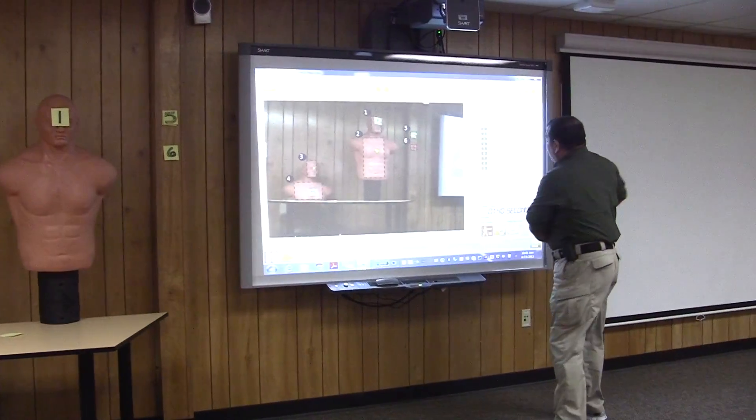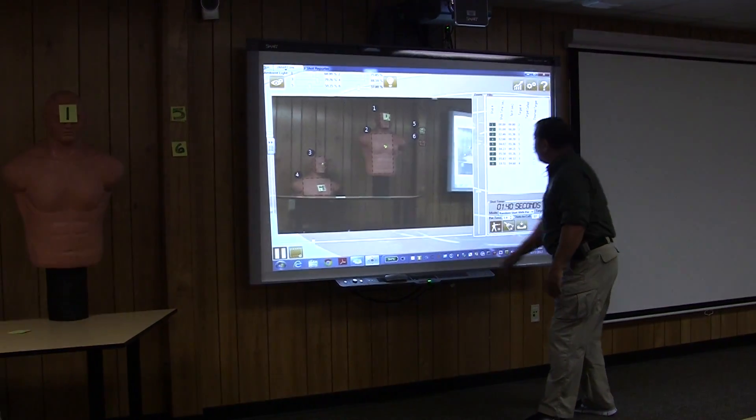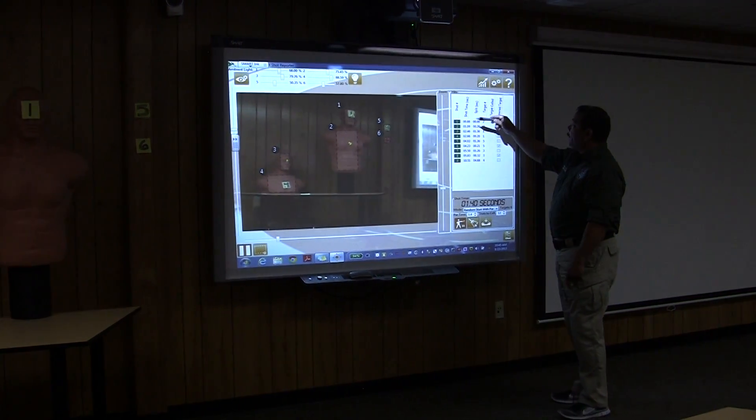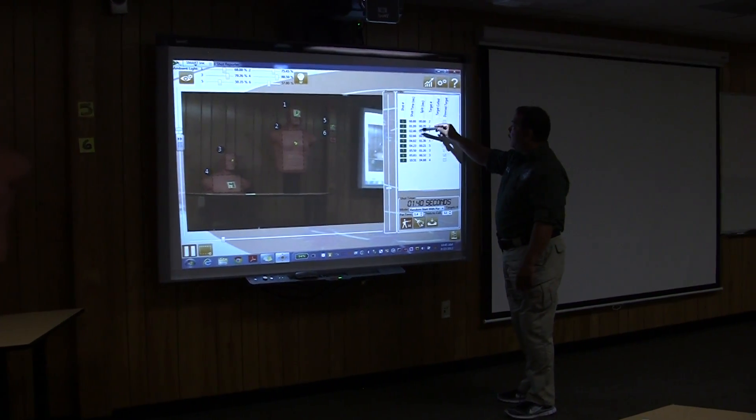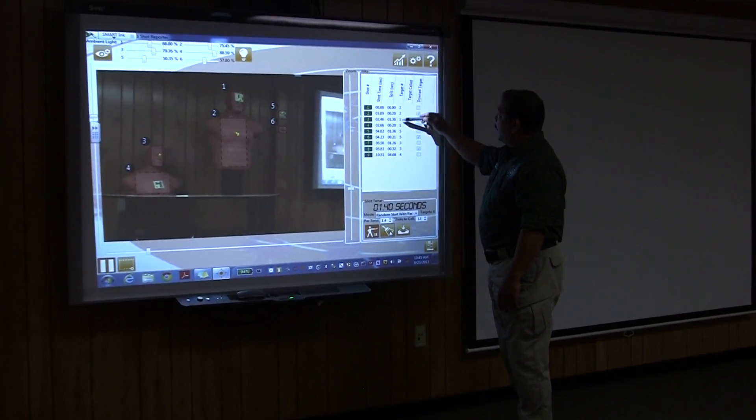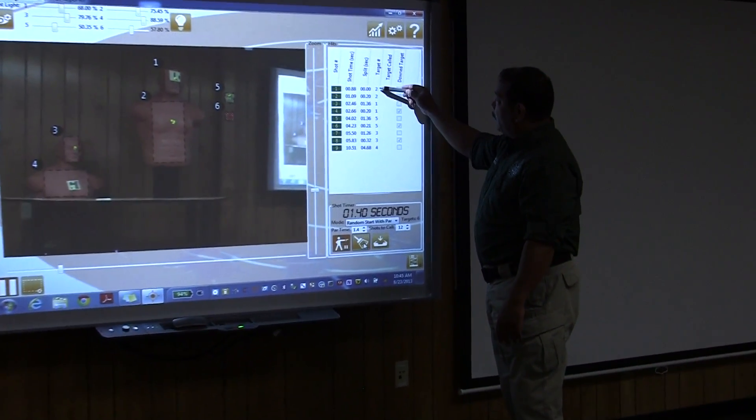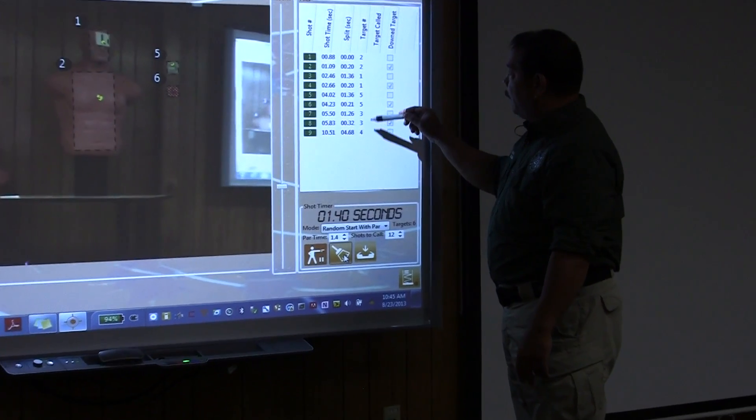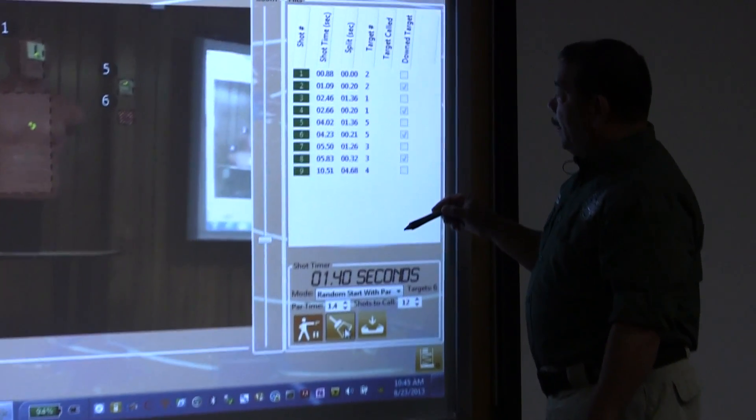So basically let's take a look at some of the information here that it's going through. Again, the shot times, the split times, and the targets. So I went from target two to one to five to three to four.